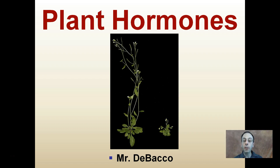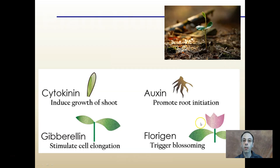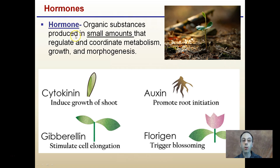Here we're going to investigate plant hormones in the general sense, just giving an overview of the impact that certain ones can have. As you can see in the picture here, hormones can impact plant behavior dramatically if used in the right amounts. Hormones are organic substances produced in small amounts that regulate or coordinate metabolism, growth, and morphogenesis.